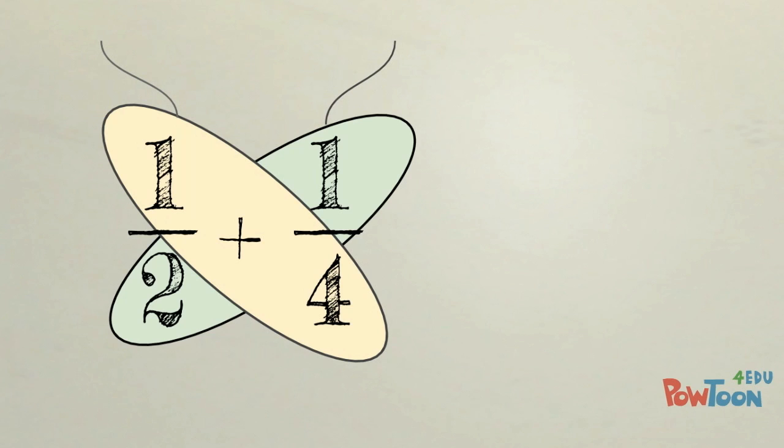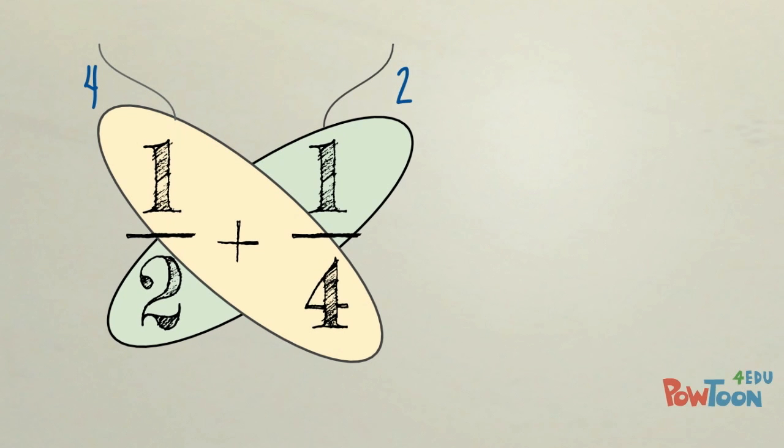So we're going to multiply the 1 times 4 to get 4, and 2 times 1 to get 2. That is now our new numerators. Then we're going to take 2 times 4 to give us 8. That is our new denominator.